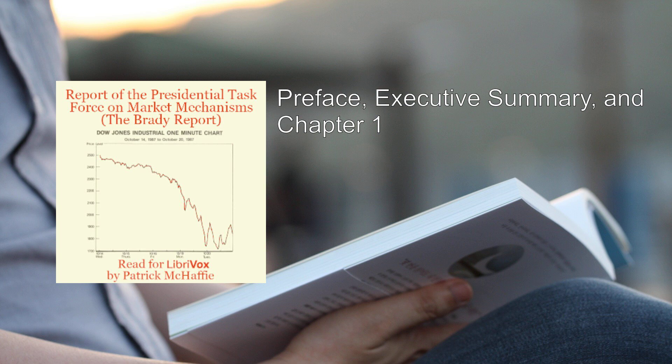Executive Summary. Introduction. From the close of trading Tuesday, October 13, 1987, to the close of trading Monday, October 19, the Dow Jones Industrial Average declined by almost one-third, representing a loss in the value of all outstanding United States stocks of approximately $1 trillion. What made this market break extraordinary was the speed with which prices fell, the unprecedented volume of trading, and the consequent threat to the financial system. In response to these events, the President created the Task Force on Market Mechanisms.